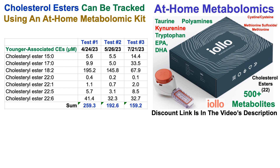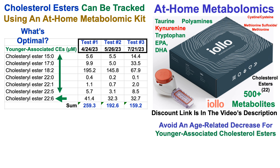Of those 22 cholesterol esters, many are younger-associated based on the PhenoAge and GrimmAge data. CE 22:6, the DHA cholesterol ester, is in this younger-associated group, along with six others. Since these cholesterol esters are associated with a younger epigenetic age, the goal is to avoid an age-related decrease — in other words, keep them high, because relatively higher levels are associated with a younger epigenetic age.